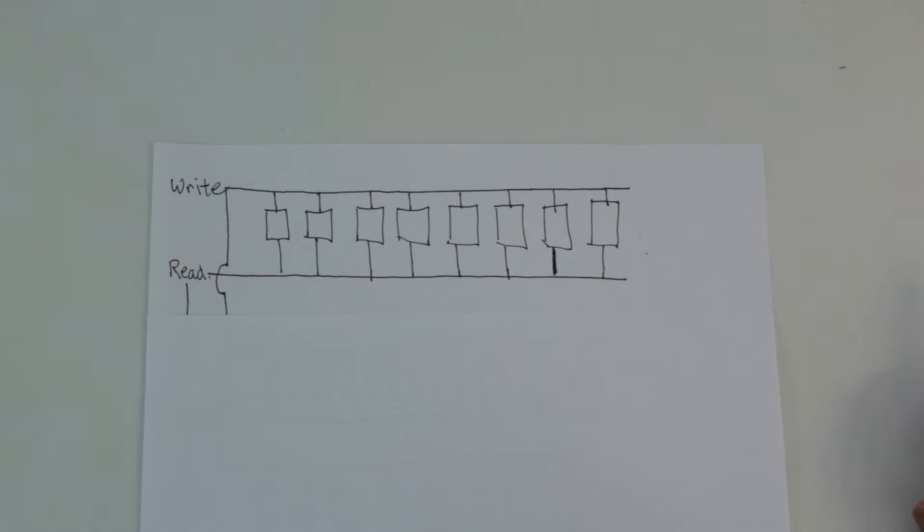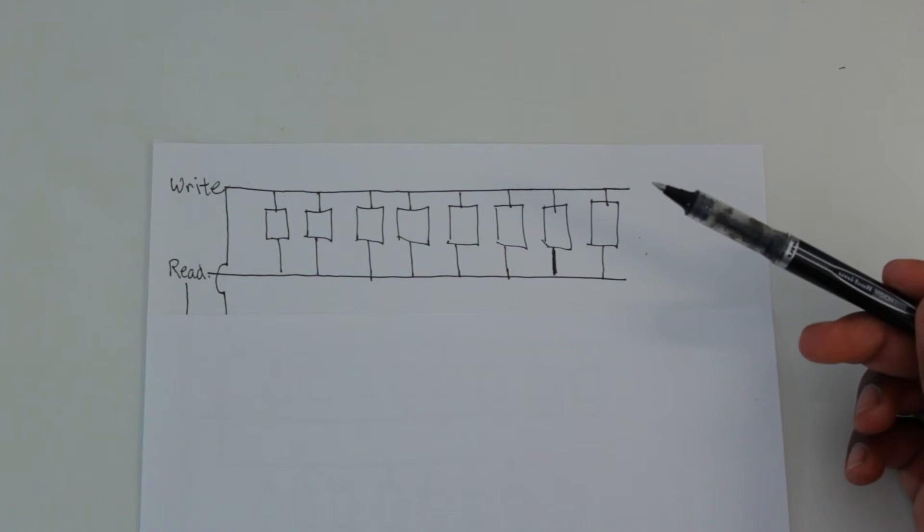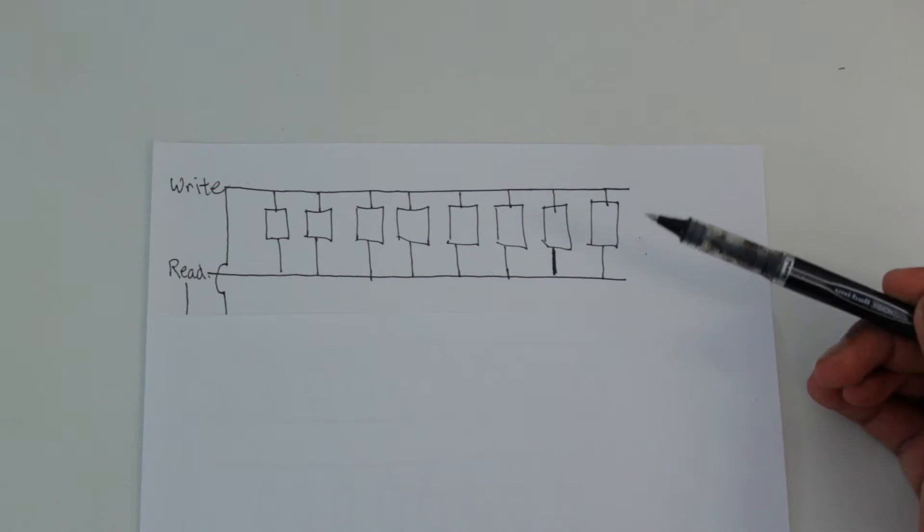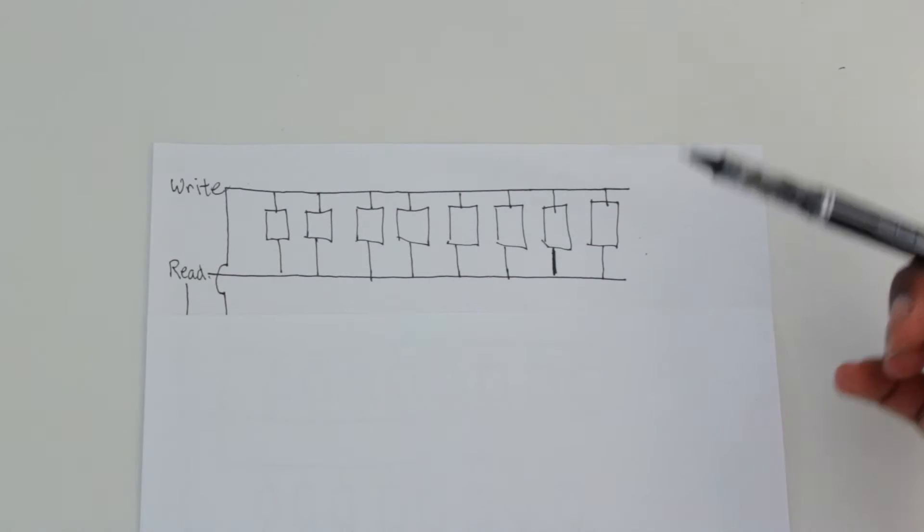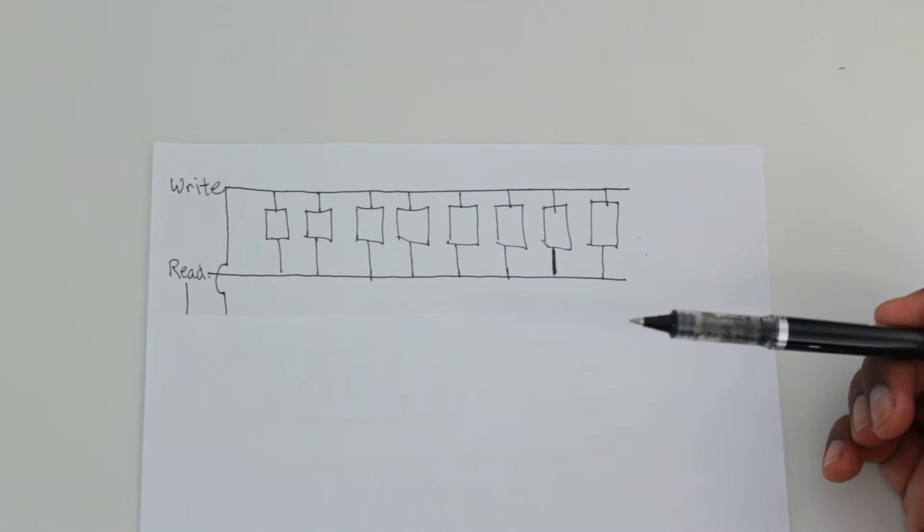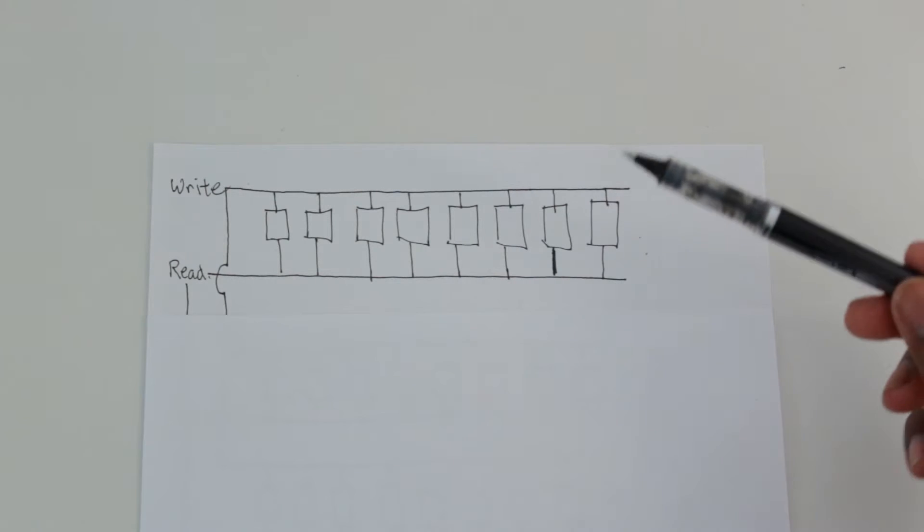So today we're going to be continuing on with our RAM module. In the last video we had, I think, one byte of RAM, maybe two bytes of RAM, that we could actually use functionally. Obviously a real computer is way more than two bytes of RAM or cache. So we're going to learn how we can make more of that. We didn't really go over the issues of making more than one byte of RAM. So that's what we're going to address right now in this video.